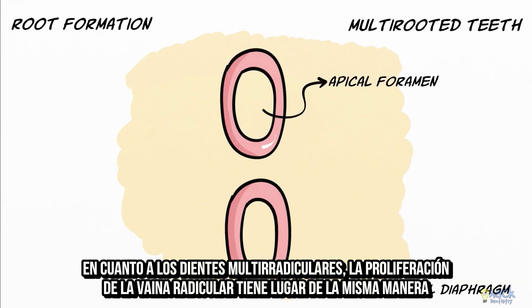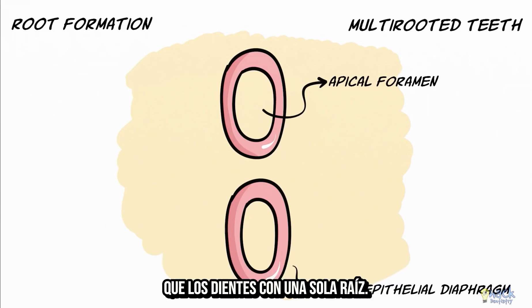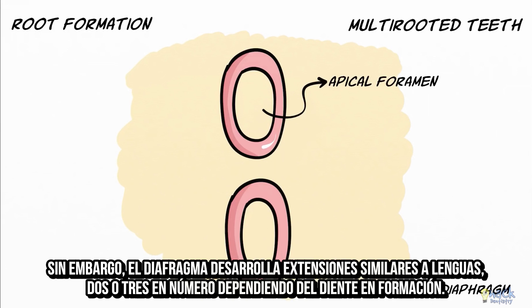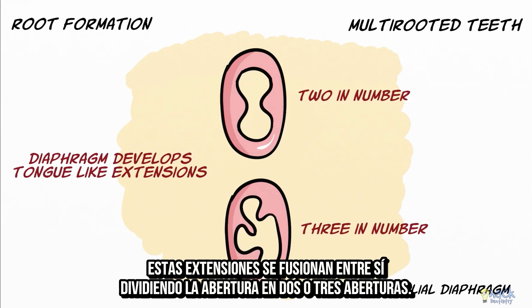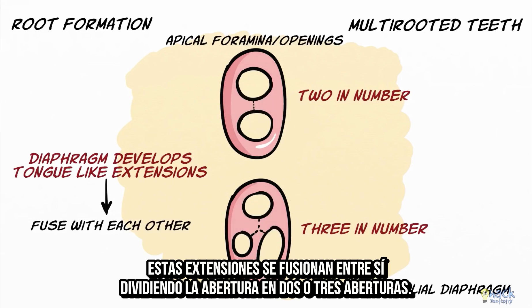As for multi-rooted teeth, root sheath proliferation takes place in the same manner as single-rooted teeth. However, the diaphragm develops tongue-like extensions, 2 or 3 in number depending on the tooth being formed. These extensions fuse with each other, dividing the apical foramen opening into 2 or 3 openings.